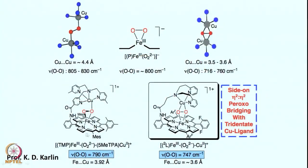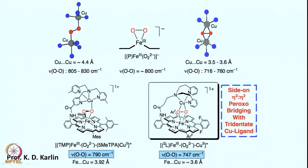The oxygen-oxygen stretch is 790 wavenumbers and the iron-copper distance is 3.92 angstrom. Remember, the iron-copper distance was 5.19 angstrom in cytochrome C oxidase, but that was for the reduced form. It is expected that perhaps in cytochrome C oxidase, the iron-copper distance will also be around 3.9 angstrom, where both iron and copper have to move closer to each other to communicate through these oxygen centers. Without oxygen, iron and copper are believed to be around 5 angstrom apart, and with oxygen they would be closer.